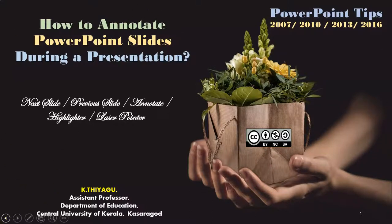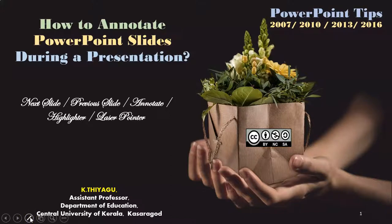After opening the first slide in slideshow view, on the bottom left side we get some helper buttons — six helper buttons are available. The first one is called Previous, to go to the previous slide. The second one is Next, to go to the next slide. The third button is very important: it contains the pen, highlighter, and laser pointer tools.